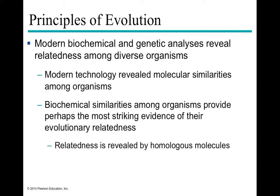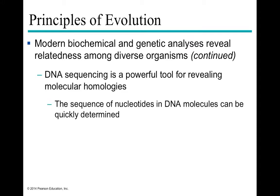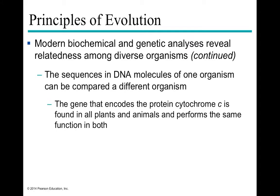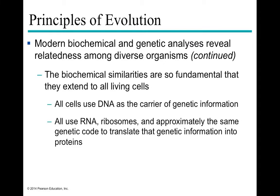Modern technology — developed over the past 20 to 30 years — allows biochemical and genetic analysis to assess organismal relatedness. Molecular similarities provide striking evidence of evolutionary relationships. Using DNA sequencing, we can examine every nucleotide in an organism's genome and compare it to other organisms. For example, the protein cytochrome C is found in all plants and animals performing the same function; comparing its molecular sequence across lineages reveals how closely related different organisms are, biochemically speaking.